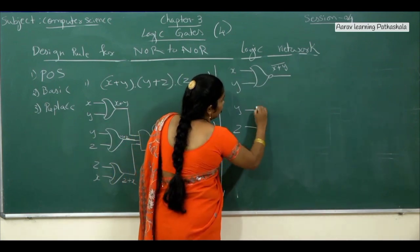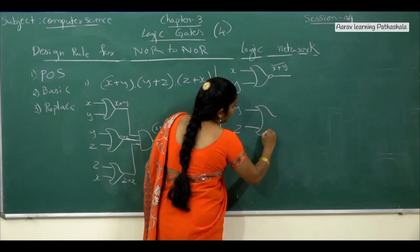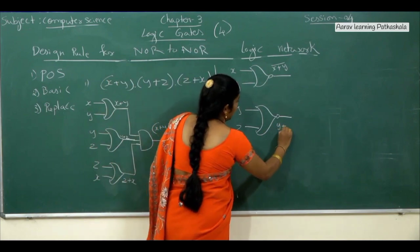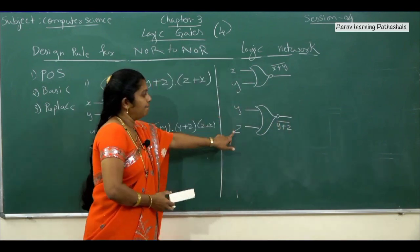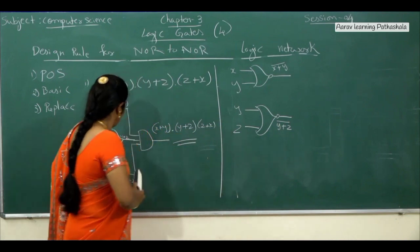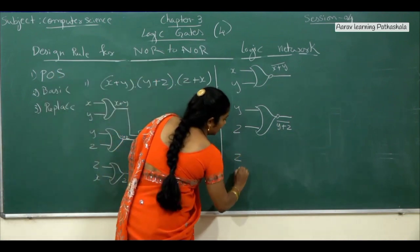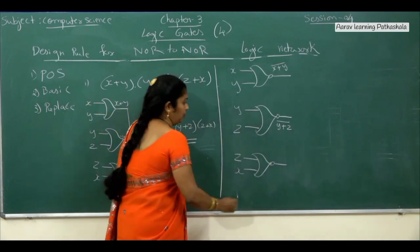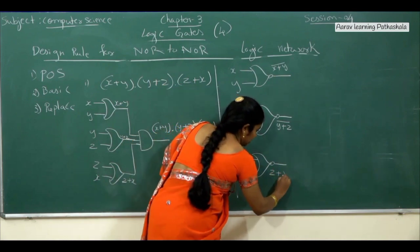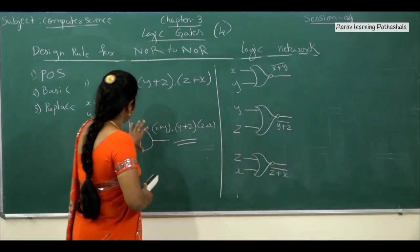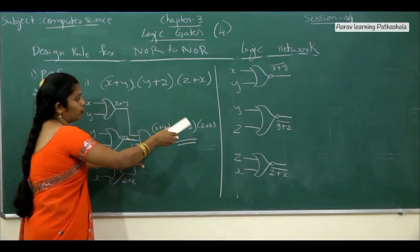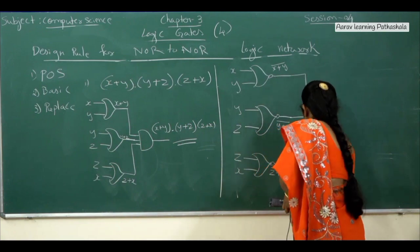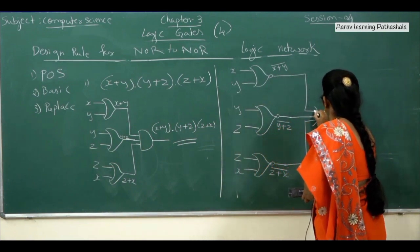For the last part, take Z and X — reverse C-shape with negation — output is Z plus X whole bar. Now replace the remaining AND gate with a NOR symbol. Connect all three NOR outputs into another NOR symbol — the reverse C-shape.